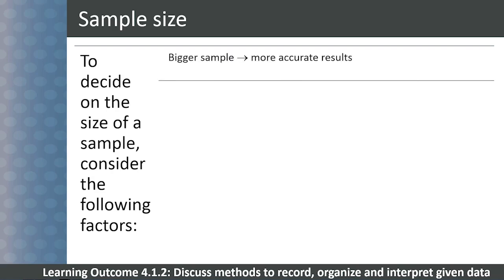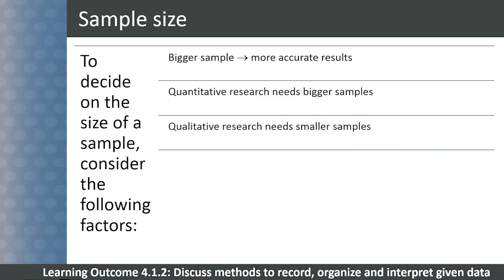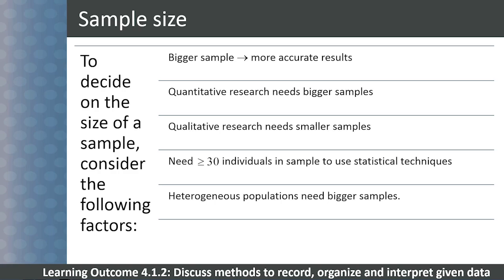Larger samples give more accurate results because they represent the population better. Quantitative research requires a larger sample size than qualitative research. To apply statistical analyses, the sample size should at least be 30. If the population has a wide range of values of the variable being measured, in other words, is heterogeneous, then the sample size has to be larger.